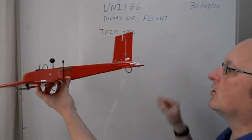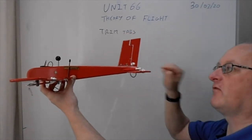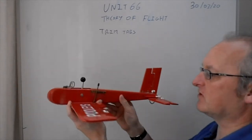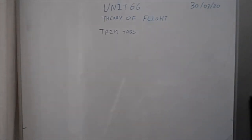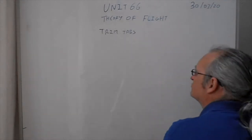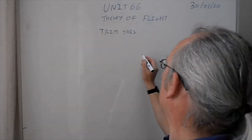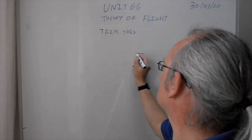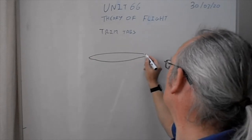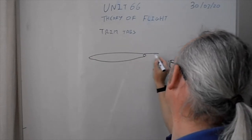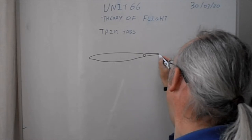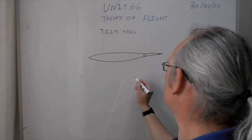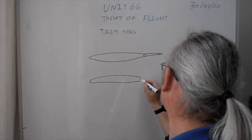To solve these problems, we use a trim tab, which is basically a very small control surface attached to the back of the main control surface. I'm going to draw it for you now. We have our main lifting surface — in this case the horizontal stabilizer, which is an upside-down airfoil — then we have the elevator on the back, and we put another further hinge there with a little trim tab at the back of that.